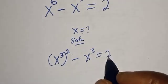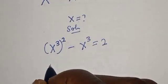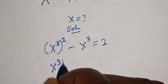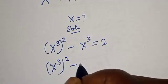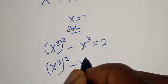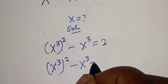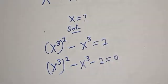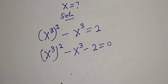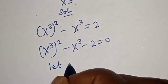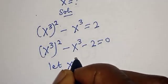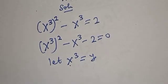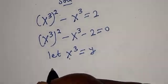Then, let's bring this to this side. We have s raised to power 3, squared, minus s raised to power 3, minus 2, is equal to 0. And let s raised to power 3 equal y.